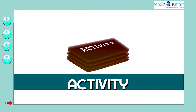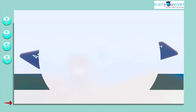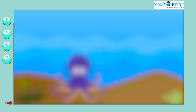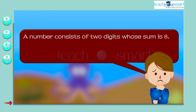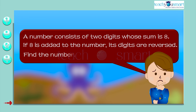Before winding up, let's check how much you understand by doing an activity. A number consists of two digits whose sum is 8. If 8 is added to the number, its digits are reversed. Find the number.